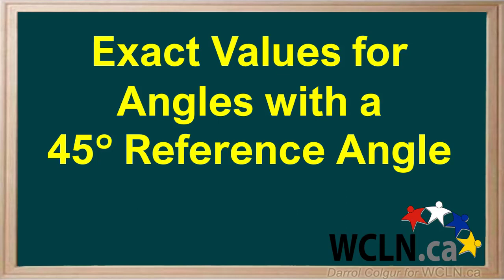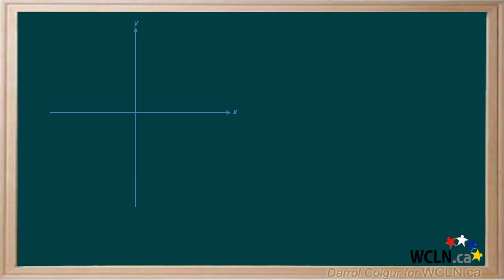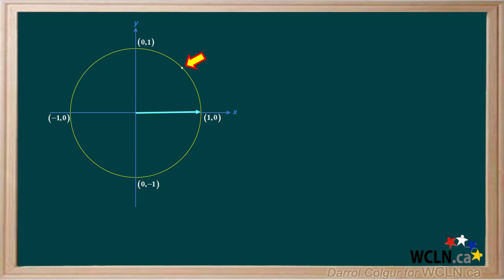We can get exact values of sine, cosine, and tangent for some special angles in standard position. Here we'll look at four angles that have a reference angle of 45 degrees. We'll start by drawing an x and y axis, then add a circle with a radius of 1. We'll draw an initial side along the x axis, put a mark on the circle at 45 degrees from the x axis, and draw a terminal arm, labeling the angle as 45 degrees.